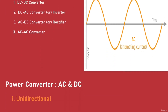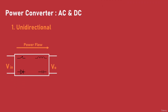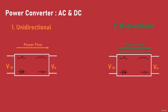The second way to classify converters is based on whether they facilitate unidirectional or bidirectional power flow. Typically, unidirectional converters use diodes at the output in order to allow power flow in one direction only. In the case of bidirectional power converters, semiconductor switches like MOSFETs or IGBTs are used on both the input and output sides.